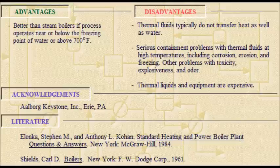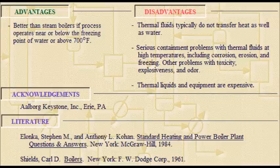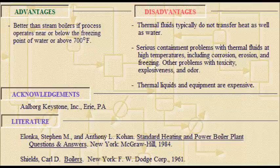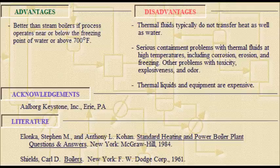Thermal liquid heaters are better than steam boilers if a process operates near or below the freezing point of water, or above 700 degrees Fahrenheit. However, thermal fluids typically do not transfer heat as well as water. There are serious containment problems with thermal fluids at high temperatures, including corrosion, erosion, and freezing. Other problems include toxicity, explosiveness, and odor. Thermal liquids and equipment are also expensive.